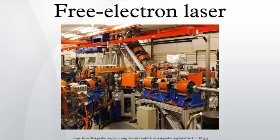The work emanates from research done by Hans Motz and his co-workers, who built an undulator at Stanford in 1953, using the wiggler magnetic configuration which is the heart of a free electron laser. Madey used a 43-MeV electron beam and a 5-meter long wiggler to amplify a signal.